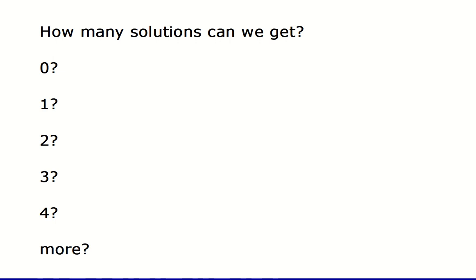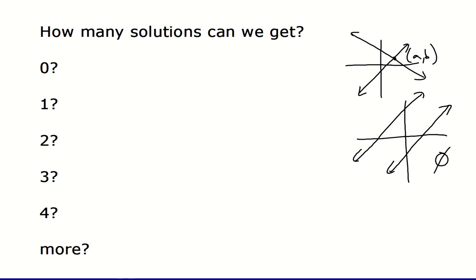So how many solutions is it possible to get? In Algebra 1, when we studied linear systems, if we were looking at straight lines, then we could have one solution, which would be where the lines intersected, we could have no solutions if the two lines were parallel, or we could have infinite solutions if the two lines were actually the same line on top of each other.